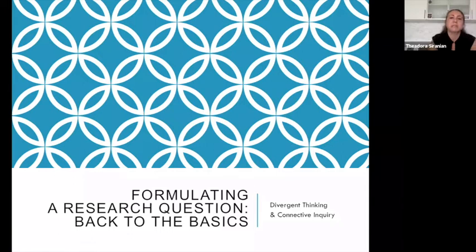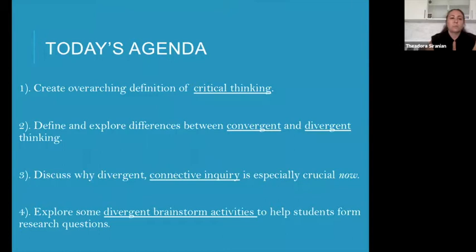Today I want to talk a little bit about going back to the basics when you're thinking about formulating a research question. Maybe you aren't even exactly sure what your research topic is yet and you're toying around with a couple different ideas — different divergent thinking and connected inquiry practices that you can employ to begin honing in on what it is exactly that you want to do. The agenda today: I want to start out by creating a simple — or maybe complex — overarching definition of critical thinking, then define and explore differences between convergent and divergent thinking, discuss why divergent connective inquiry is especially crucial now in the 21st century, and conclude by exploring some actual divergent brainstorm activities that students or teachers can use to begin thinking about forming research questions.